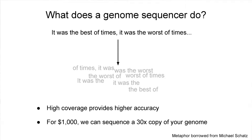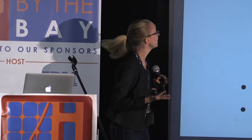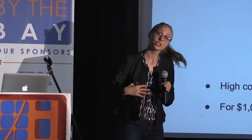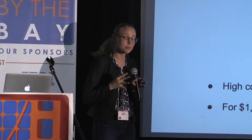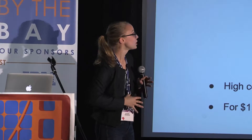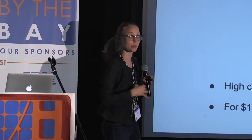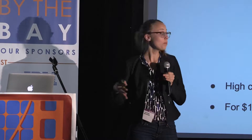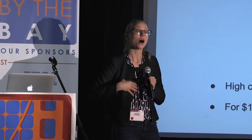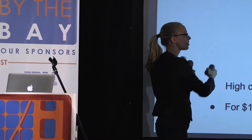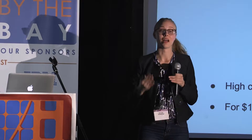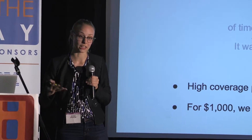How do we actually get this genomic data in the first place? We get it from a genome sequencer. We can model this problem as a simple sentence: 'It was the best of times, it was the worst of times.' We take our DNA and input it into a genome sequencer, and what we get as output is a bunch of smaller subsequences of our original input, overlapping in no particular order. We then have to align these sequences to get some idea of what our genome actually looks like.